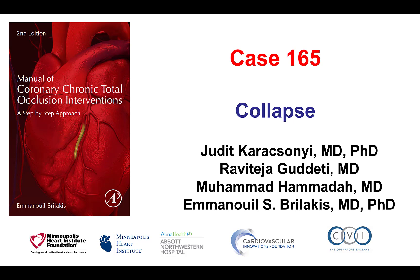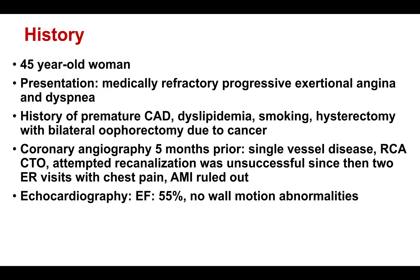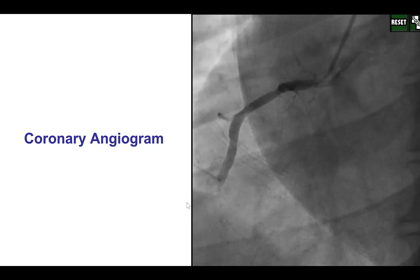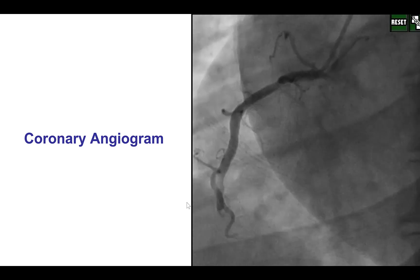This is a case of hemodynamic collapse during CTO-PCI. The patient presented with angina that was refractory to medical treatment. She had an angiogram a few months prior that showed single-vessel coronary disease with a CTO of the right coronary artery. An attempt was made to re-canalize the RCA that was unsuccessful. The ejection fraction was normal, and because of that refractory angina, the patient was referred for a second attempt of CTO-PCI.